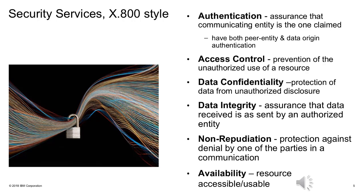Data origin authentication is a corroboration of the source of the data. Bob can look at the message and confirm that Alice actually sent it — authenticating both Alice's identity and that the message came from Alice. These are two powerful points on the authentication side.